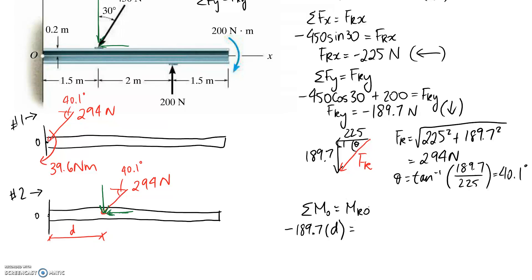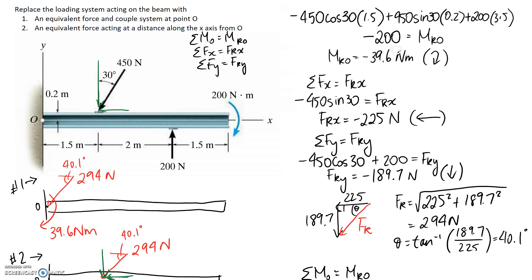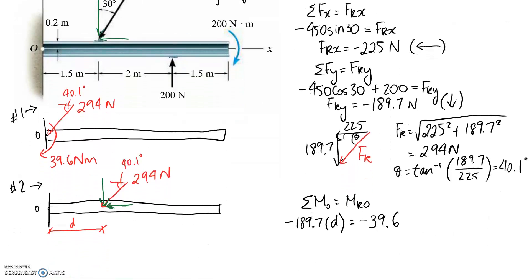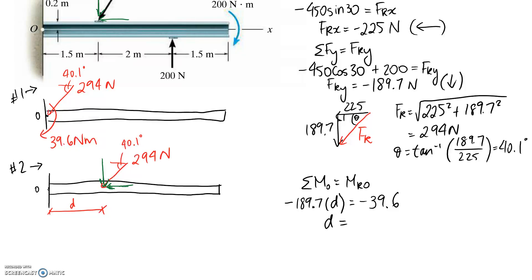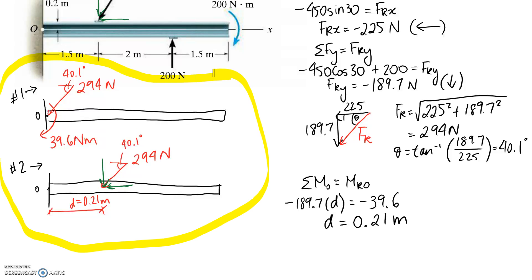On the right-hand side of the equation it must equal M_RO, which is negative 39.6 newton metres — negative because it's clockwise. The only unknown in this equation is d, and solving for it gives d equal to about 0.21 metres. So the final answer for part two is a 294 newton force acting at a distance of 0.21 metres along the x-axis from O, which is exactly equivalent to having a 39.6 newton metre moment applied at O. These two diagrams are the complete answers to the question.